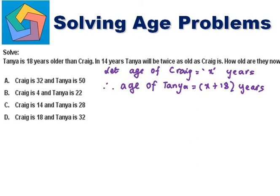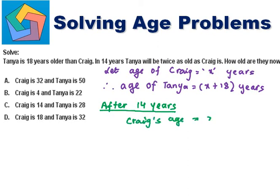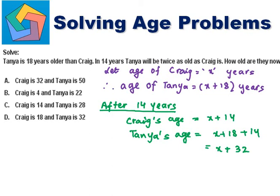Now, in 14 years — after 14 years — Kreech's age will be X plus 14. And Tanya's age will be X plus 18 plus 14, that's equal to X plus 32. And it says in 14 years, Tanya will be twice as old as Kreech is. So we can say, according to the question, X plus 32 will be twice of X plus 14.